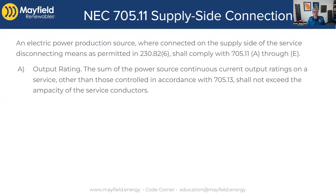What 705.11a is saying is that the sum of the power source continuous current output ratings on a service — other than those controlled by a power control system defined in 705.13, which we're not going to talk about right now — we're just talking about traditional PV inverters connected to the supply side of a main disconnect. The sum of those shall not exceed the ampacity of the service conductors. So if you have a PV system connected to a service, you can't exceed what those service conductors are rated for. Those conductors are rated for a certain amount, and that's what we have to stick to.